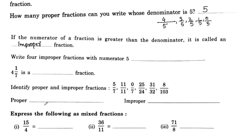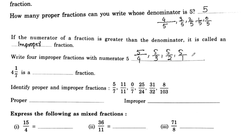Next question: write 4 improper fractions with numerator 5. With numerator 5, the denominator must be less than 5. So we write: 5 by 4, 5 by 3, 5 by 2, and 5 by 1. Note that 5 by 5 would be equal to 1, so it is not improper.